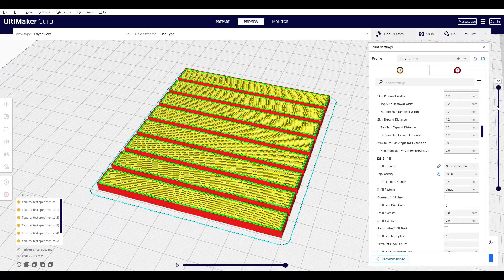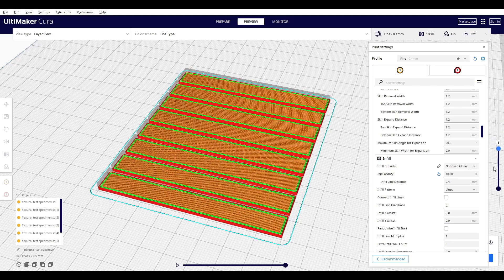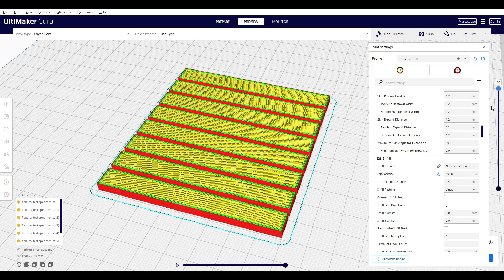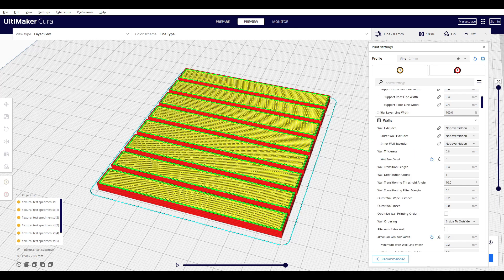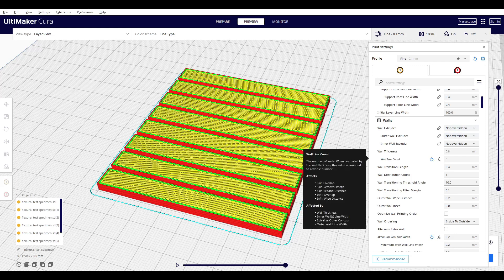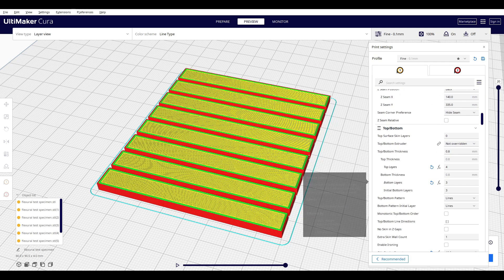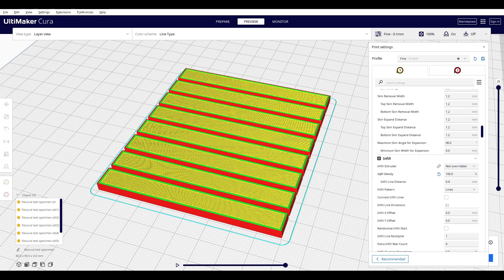Both experiments will utilize specimens with the same dimensions: 80 mm by 10 mm by 4 mm. For the printing settings, each specimen will have three bottom layers and four top layers with 100% line pattern infill. Since some materials are sensitive to humidity...